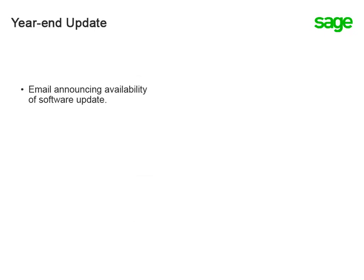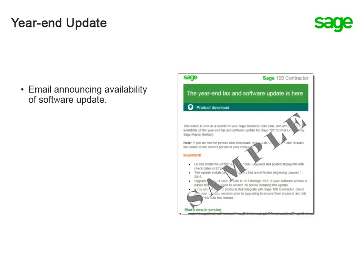The first step you will need to take is to install the year-end update. When the update is available, an email will be sent to all contacts containing a software notice. This notice will include links to information about the changes being made and instructions to download and install the appropriate update for your software.